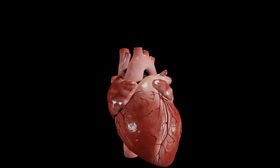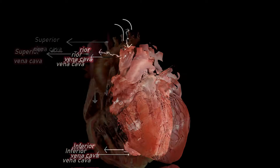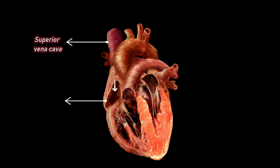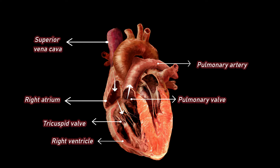The deoxygenated blood returns to the heart from the body's tissues through the superior and inferior vena cava, entering the right atrium. From the right atrium, blood flows through the tricuspid valve into the right ventricle. The right ventricle contracts, pumping the deoxygenated blood through the pulmonary valve and into the pulmonary artery.